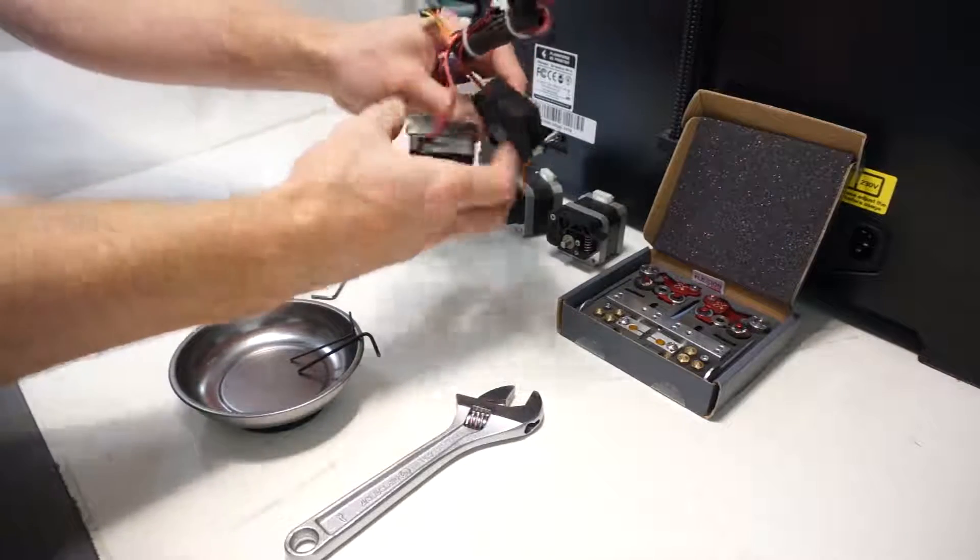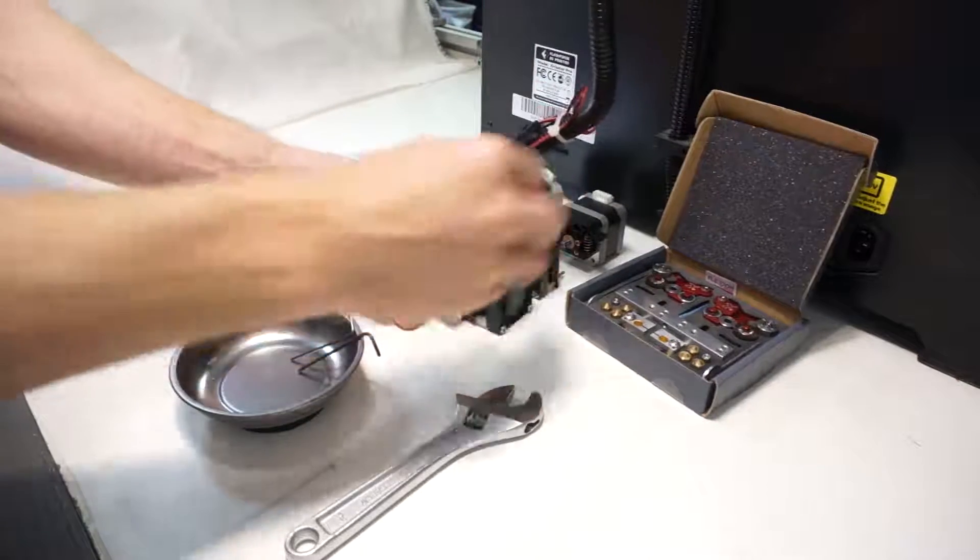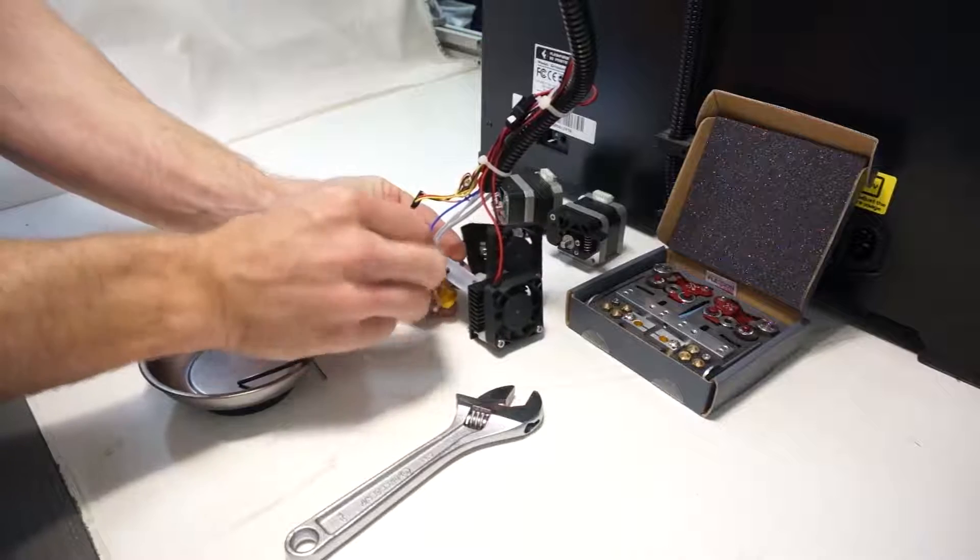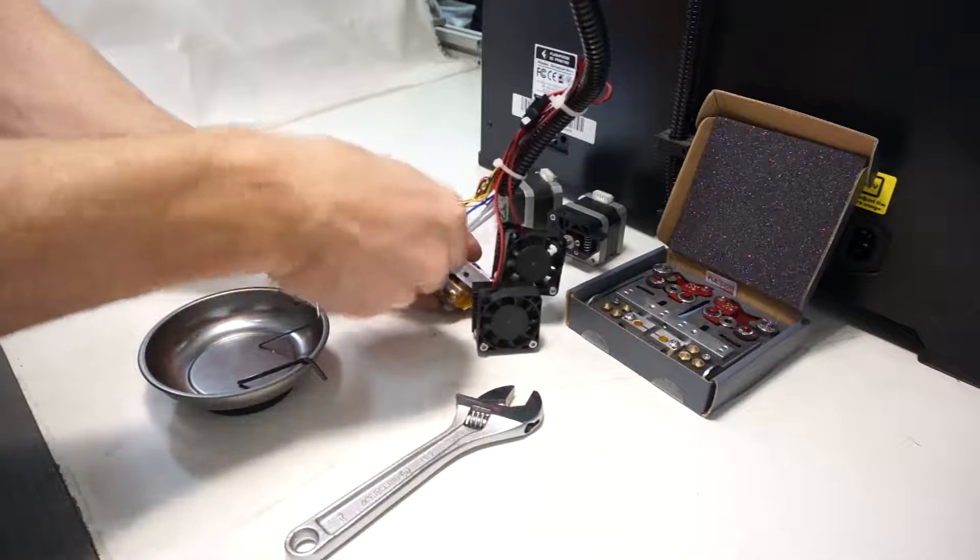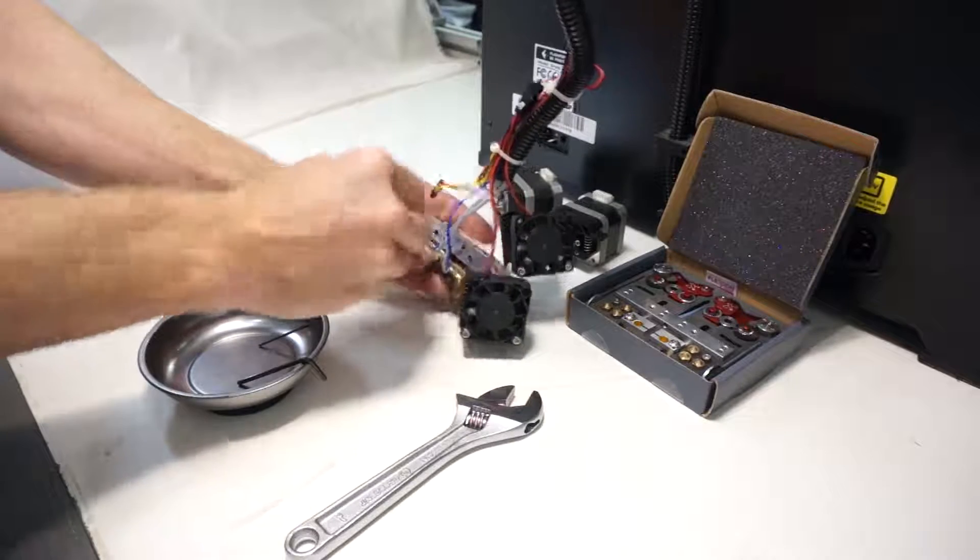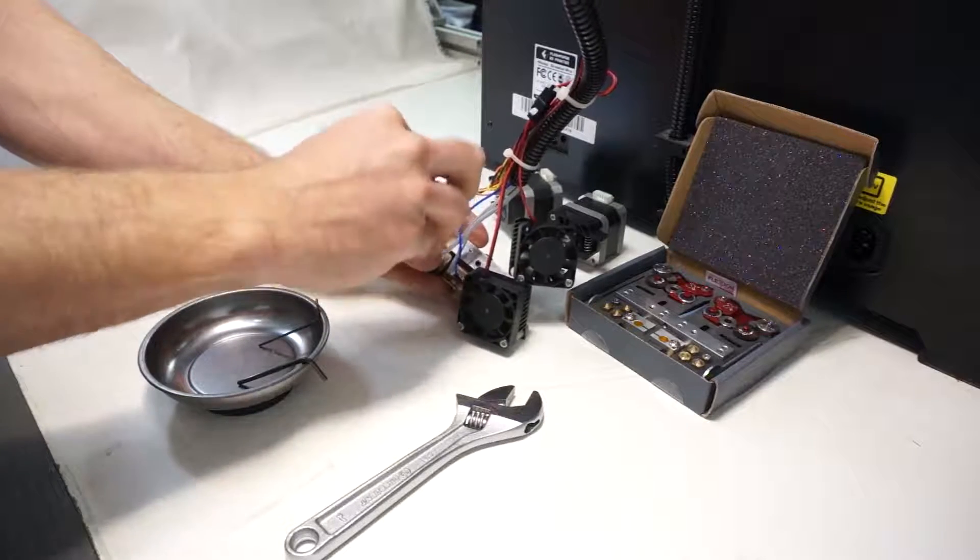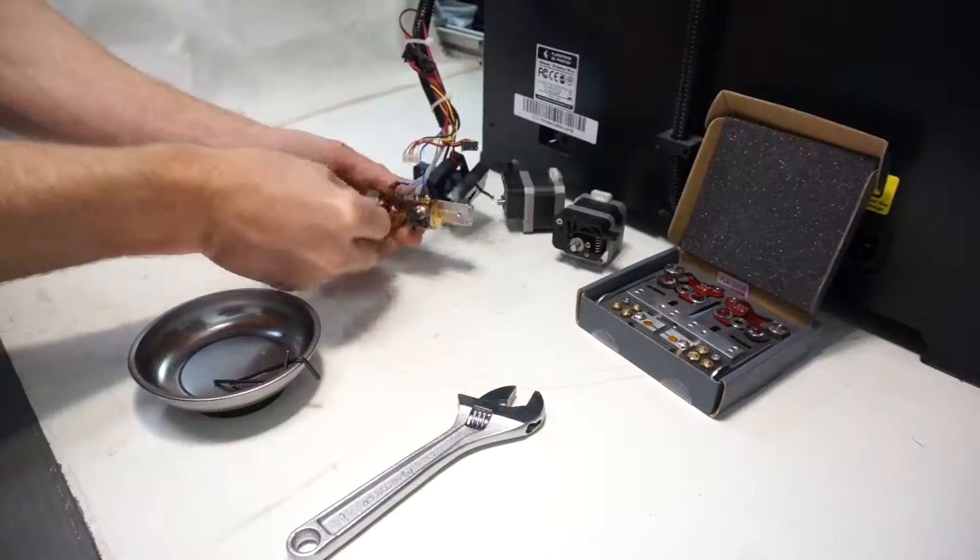Then remove the fans off the front. Loosen the set screws holding the barrels in place. But unfortunately, because of the poor design here, there's no relief on the barrel. So the set screw galls up the OD of the barrel and prevents it from sliding out of the bore.